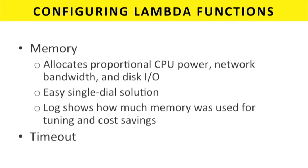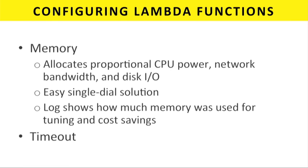Configuring Lambda functions is actually really easy — there are really only two knobs to tune. The first is memory, which is a proxy for everything — a small/medium/large kind of configuration. You specify memory and CPU, network bandwidth, and other things scale with it. The other knob is timeout — you can say you want your Lambda function to execute for no more than 30 seconds, and if it doesn't finish it aborts, preventing the Lambda function from being hit by bad attacks.